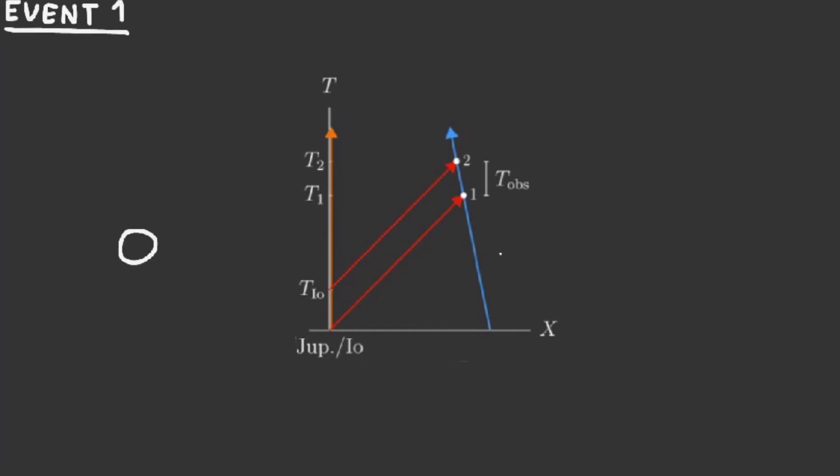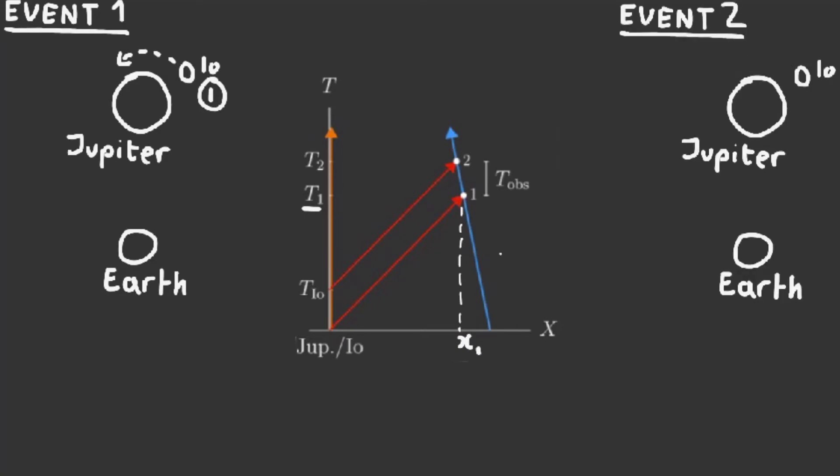The first event occurs when Rømer observes Io just moving behind Jupiter at T1, and the Earth is x1 away from Jupiter. Then, after a time interval, he instantaneously observes Io coming back from the other side, and this event occurs at T2 when the Earth is closer at x2 from Jupiter. Notice how T2 occurs later but closer to Jupiter, since remember the Earth is constantly in motion and it is getting closer to Jupiter. There is one more very important thing to notice here. In our diagram, the slope of the red world lines is in fact light propagating with speed c from Jupiter to Earth.